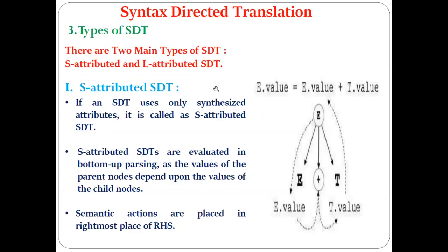Now let's see the types of SDT. SDT stands for syntax directed translation, which is the original grammar plus added semantic rules. From the generated SDT we produce an annotated parse tree, traverse it to compute attribute values, and check whether the expression is correct. This whole process is called syntax directed translation. There are two main types: S-attributed SDT and L-attributed SDT.